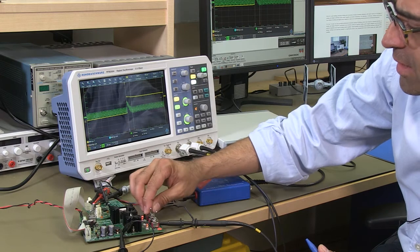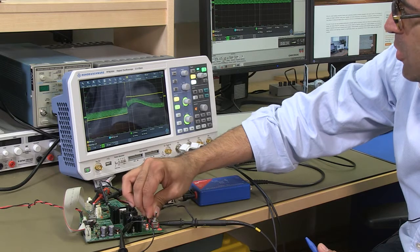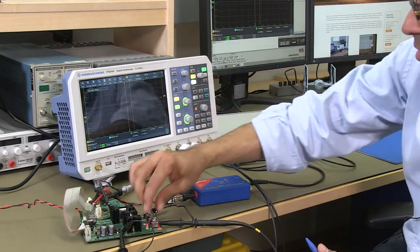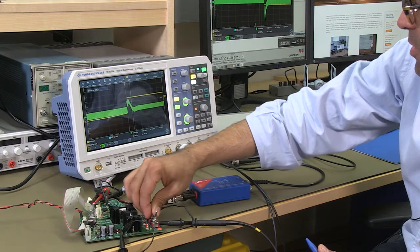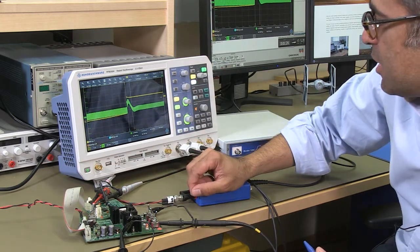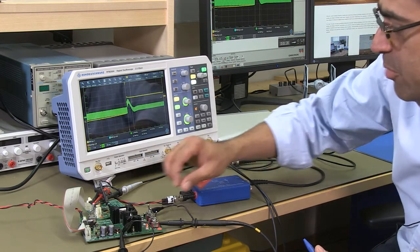Now if I take some load off and get the power supply in discontinuous conduction mode and I start doing the load step again you will notice that actually the whole thing slows down quite significantly to almost 500 microseconds.